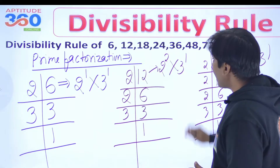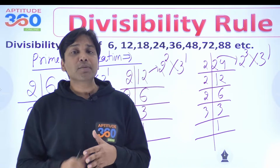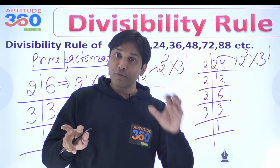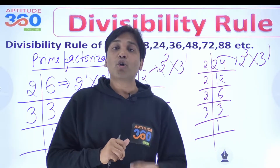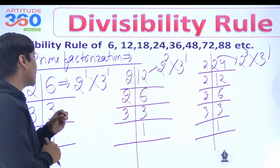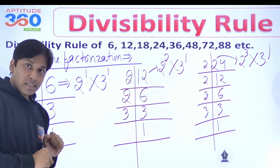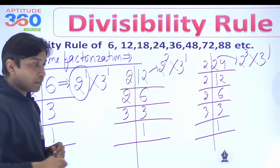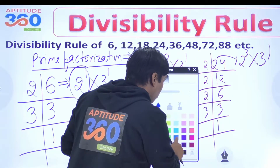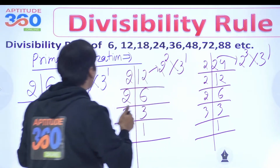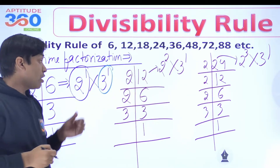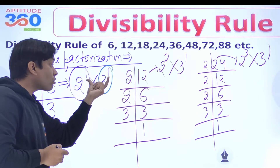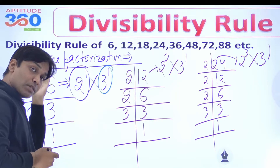Now people get confused. If you want to find the divisibility rule of 12, should we say it is divisible by 2 and 6, or by 4 and 3? That is the kind of confusion that you always have. So what you should be doing: for example, if you want the divisibility rule of 6, a number which is divisible by both 2 and 3 is going to be divisible by 6. So a number divisible by 2 and also by 3 is divisible by 6.